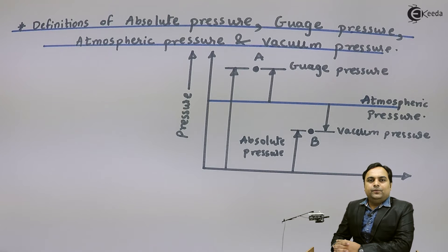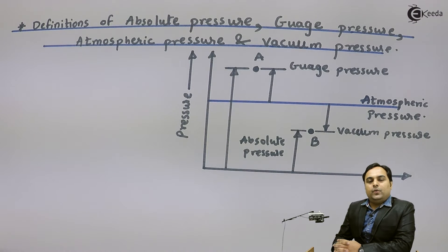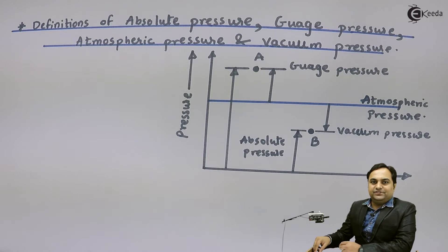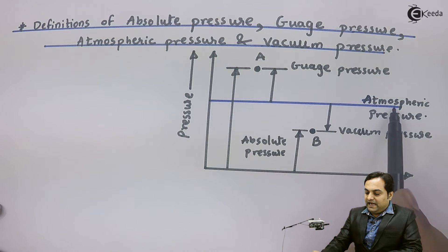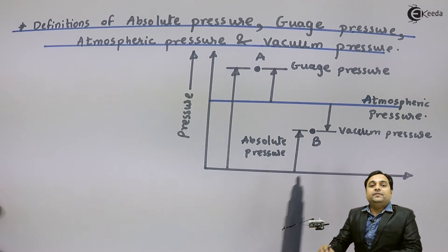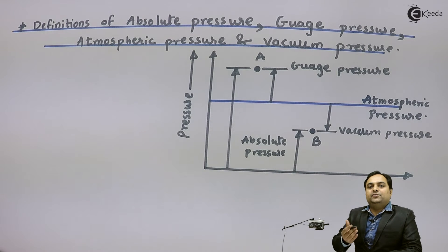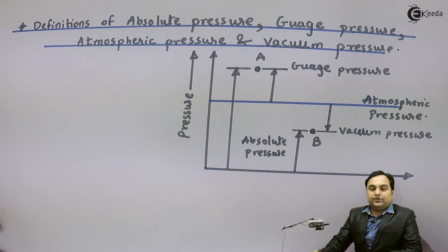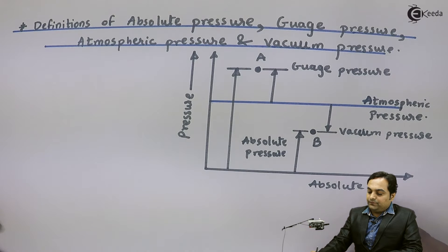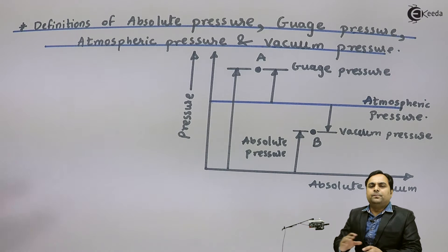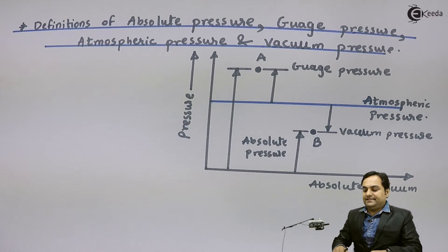Hello friends, in this video we will see the definitions of absolute pressure, gauge pressure, and vacuum pressure. For that purpose we have a diagram here. In this diagram, the blue line indicates atmospheric pressure — the pressure of the atmosphere around us. The horizontal line at the bottom indicates absolute vacuum, which is a complete vacuum meaning no pressure is exerted there.